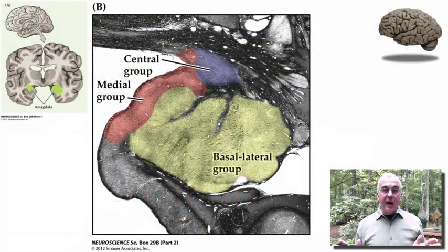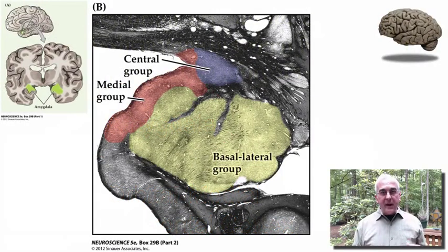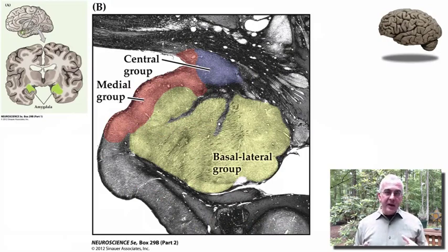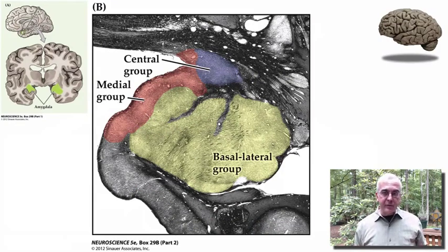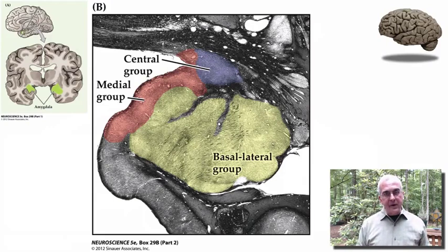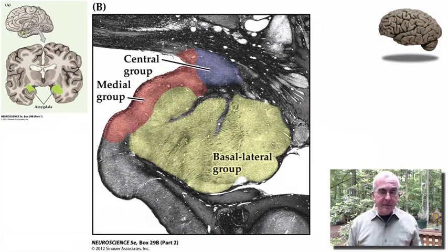As I've reminded you in a recent tutorial, the amygdala is a massive gray matter structure found in the anterior and medial part of the temporal lobe. The amygdala is largely anterior to the hippocampus and the temporal horn of the lateral ventricle, but there is a little bit of the posterior amygdala that overlaps with the hippocampus. For the most part, think of the amygdala as anterior to the hippocampus in the medial part of the temporal lobe.